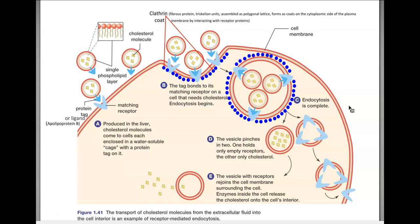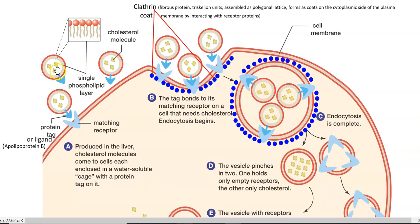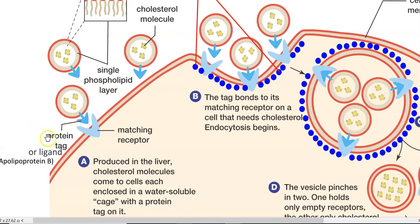This diagram clearly explains the entire receptor-mediated endocytosis process by which cholesterol is taken up by the cells. The cholesterol molecule is the yellow-colored thing surrounded by a cage-like layer made up of a single monolayer of phospholipids, in which the cholesterol molecule is locked. This cholesterol molecule has a dark blue color tag called a protein tag or ligand molecule, which is made up of apolipoprotein. This particular tag will exactly fit into a receptor, referred to as a matching receptor. Because these kinds of receptors are involved in this process, it is referred to as receptor-mediated endocytosis.